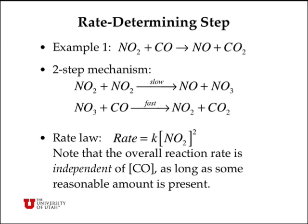Let's consider an example: the reaction of NO2 with CO to produce NO plus CO2. This actually goes by a two-step mechanism, and although looking at the overall reaction you might assume that it's first order in NO2 and first order in CO, the slow step is actually second order in NO2, and that controls the overall kinetics. So the overall reaction rate is actually independent of the carbon monoxide concentration, as long as some reasonable amount is present to make the second reaction fast.